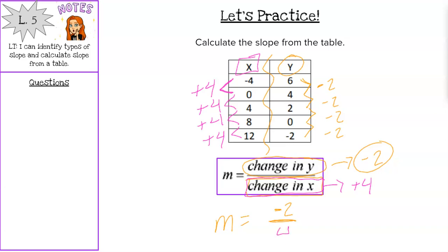So we have negative two over positive four. We don't need the positive sign because four is just positive by itself. However, we do need to ask ourselves if we need to reduce this fraction. Negative two over four can be divided by two on both top and bottom. Negative two divided by two is negative one. Four divided by two is two. So that reduces to negative one half. So that would be our slope. Our slope would be negative one over two.